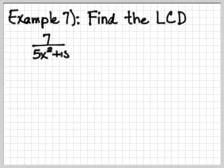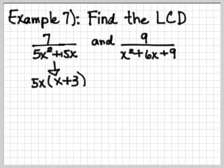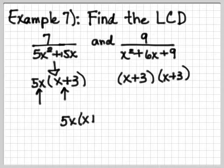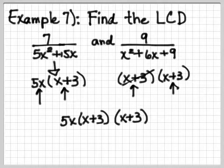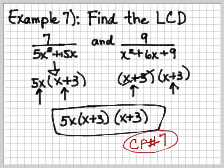Here's our example: find the LCD of these two fractions. If we factor the first, we get 5x times (x + 3). If we factor the second, we get (x + 3) times (x + 3) — that's a perfect square. So our first two factors will be 5x times (x + 3). We already have one (x + 3), but now we have another (x + 3), so we have to write that one down too. This is what our least common denominator will be.